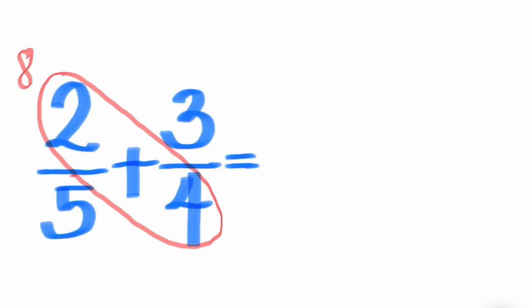Step number two. Draw a wing-like structure crossing over the denominator of the first fraction and the numerator of the second fraction. Then multiply them and write the answer over the numerator of the second fraction.